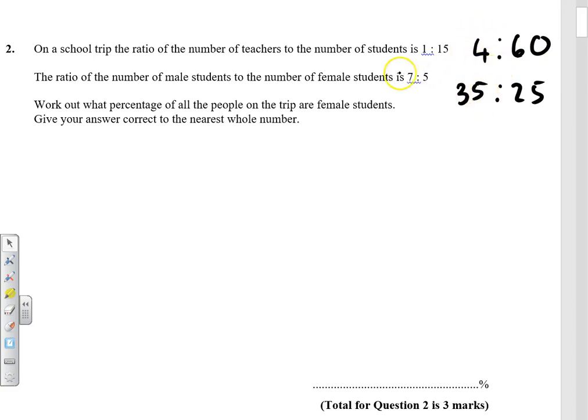Now it's male to female, so actually there are 25. Doesn't matter the exact number because we're working out a percentage. So if we do 25 out of the total, well the total is 60 students and 4 staff.